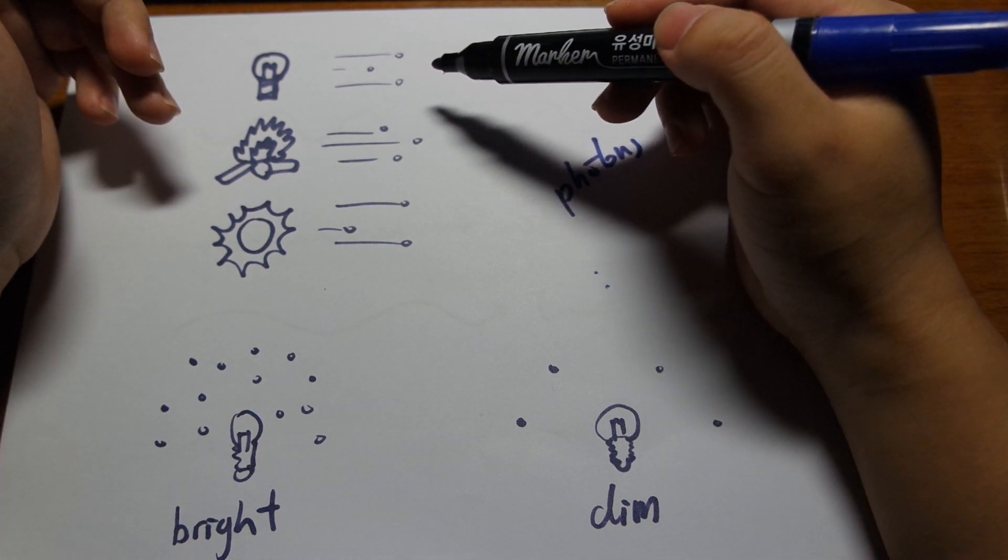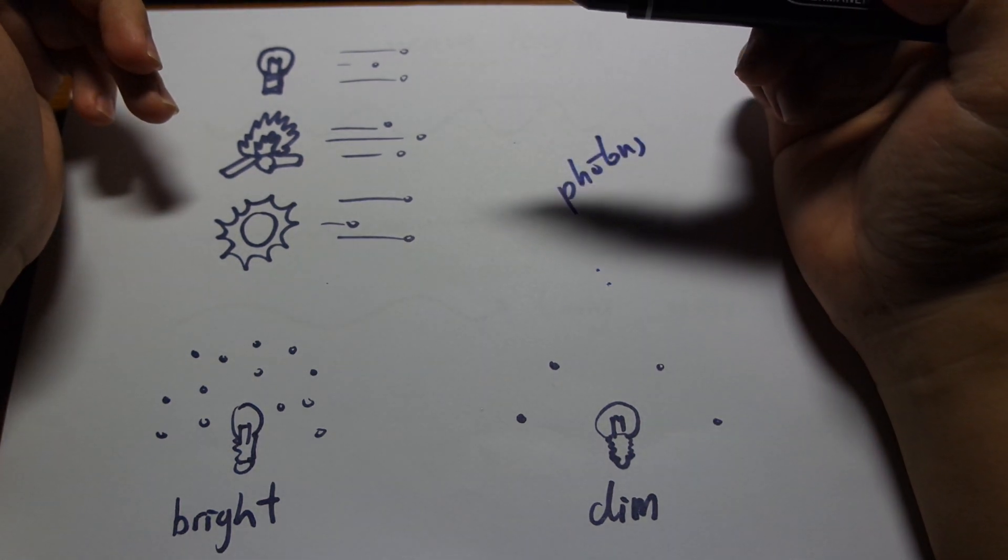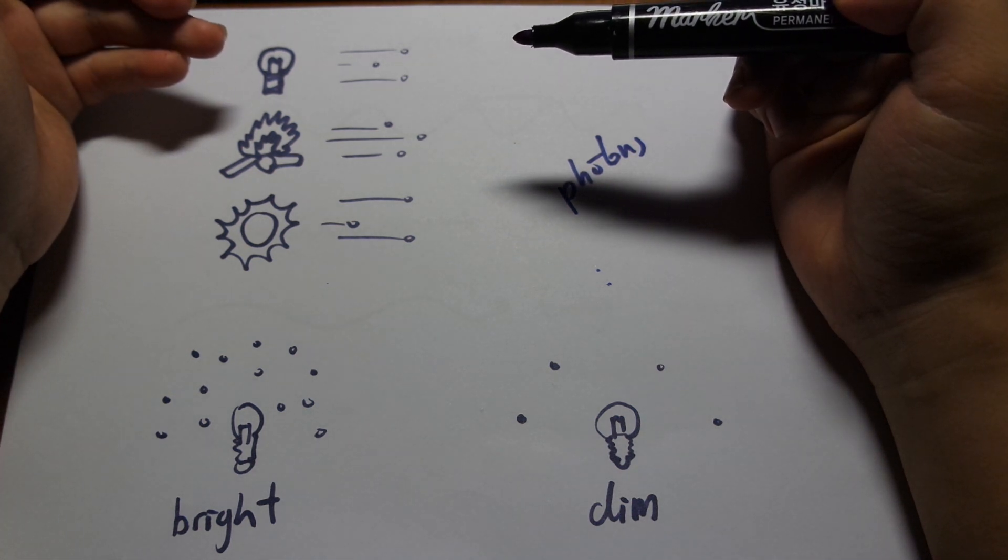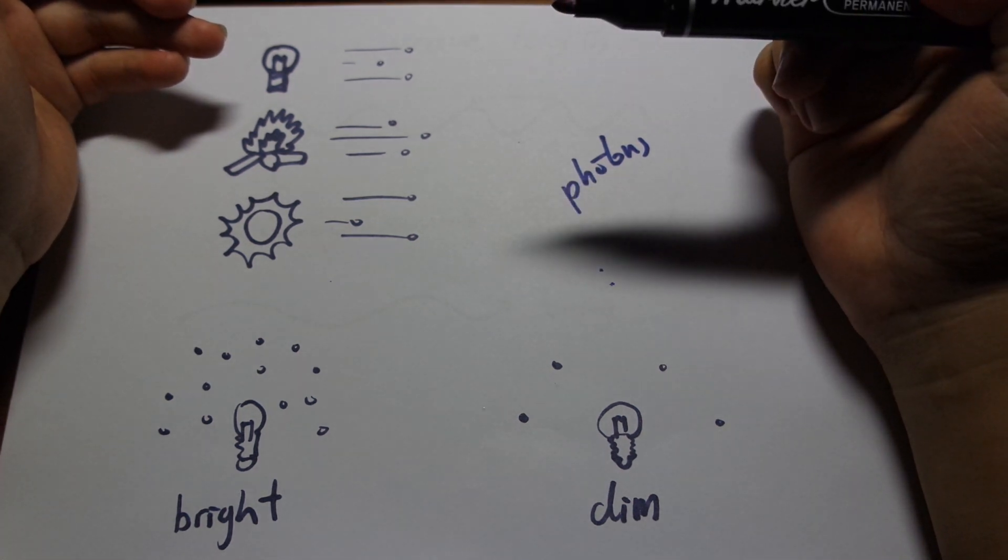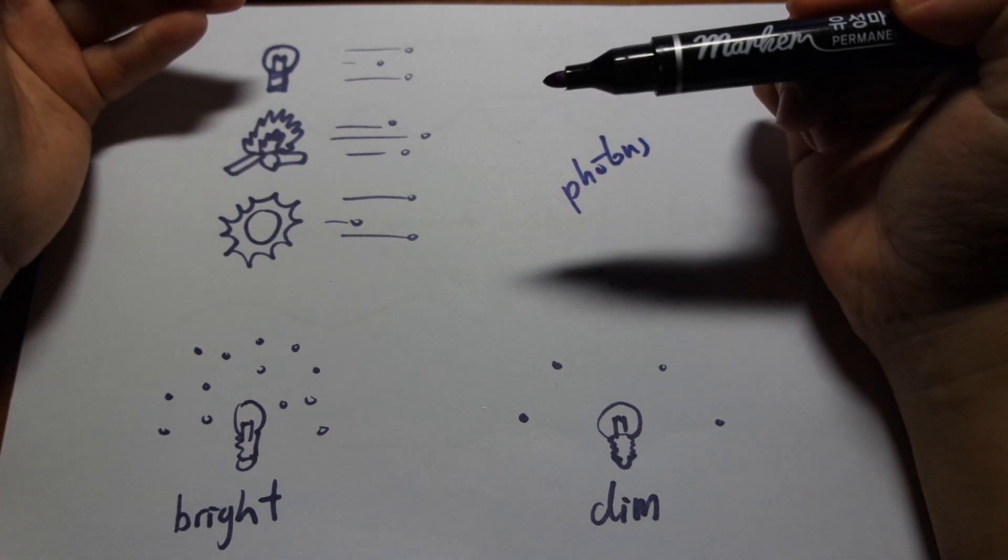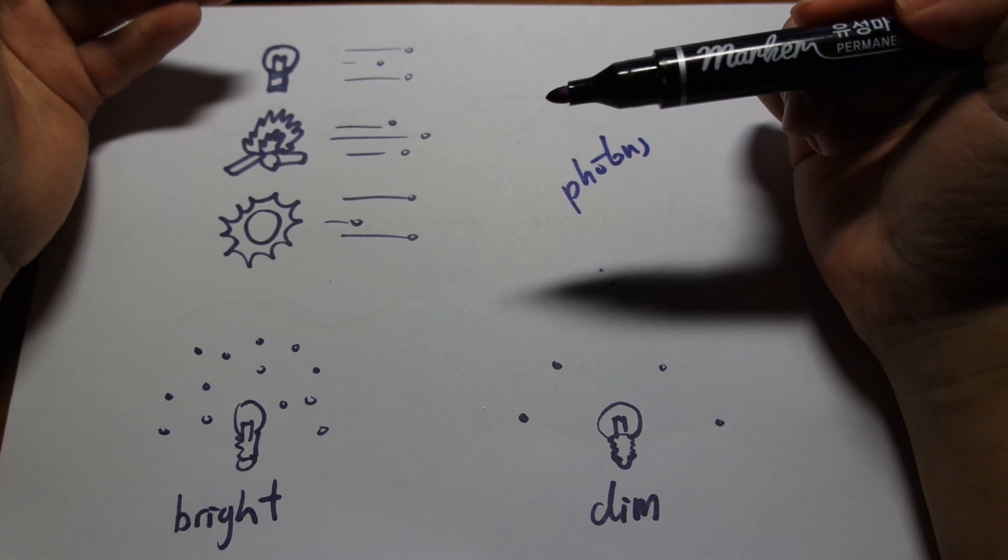When you see a light bulb light up, it's the same story whether it's a fire, it's the sun, it doesn't matter. Light is light. So a common misconception is that light from, say, incandescent light bulb is somehow fundamentally different from light from an open flame. That is not true. If it's light, it is a photon.